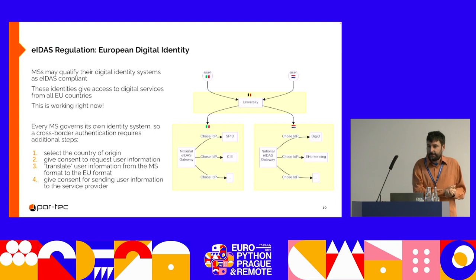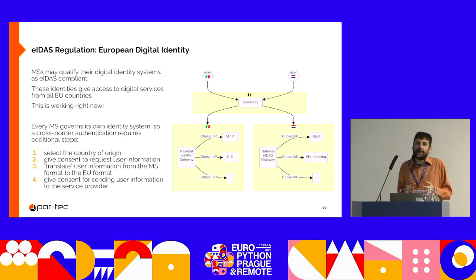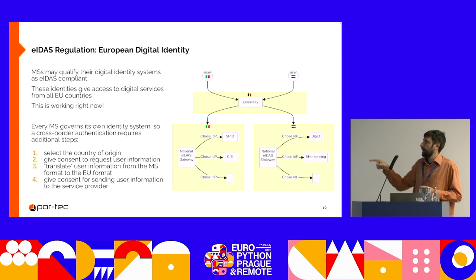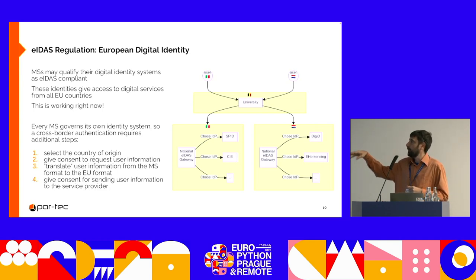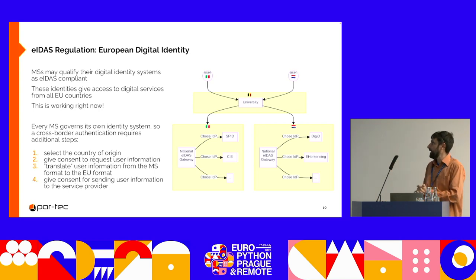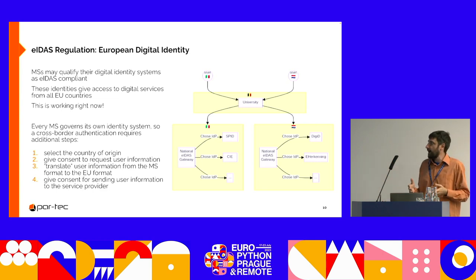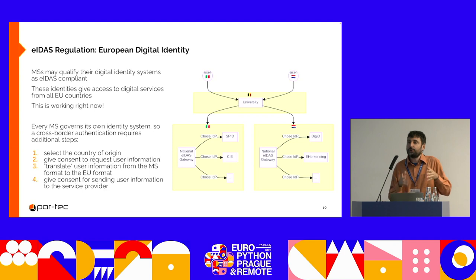Since every member state has its own list of identity providers and different user attributes, they require a national gateway — national components. There are two users from different countries trying to use the service of a Belgian university. The Italian user is redirected to the Italian identity infrastructure that does all the checks and brings the user back to the Belgian university. The same happens for the Dutch user. With 27 of those blocks, there is a lot of complexity, and you will be continuously asked to give consent for your data going from your national identity provider to a foreign country.